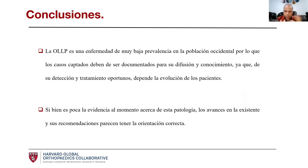En la escala de Nurick tuvimos una mejoría del 4 al 1, y la escala de la Asociación Japonesa Modificada mejoró de 5 a 14 puntos, lo que nos da un índice de recuperación del 75%. Para concluir, la osificación del ligamento longitudinal posterior es una enfermedad de baja prevalencia, sobre todo en población occidental, por lo que los casos captados deben documentarse para su difusión, ya que de su detección y tratamiento oportunos depende la evolución de los pacientes. Nuevamente agradecer al doctor Fernando Carrillo por la invitación.